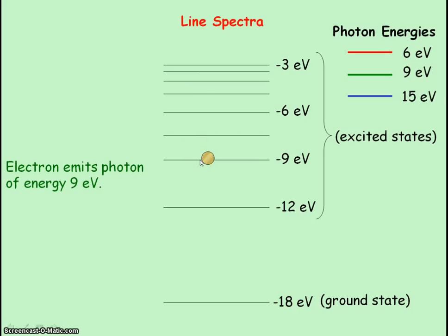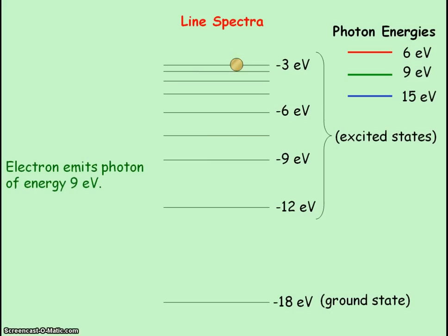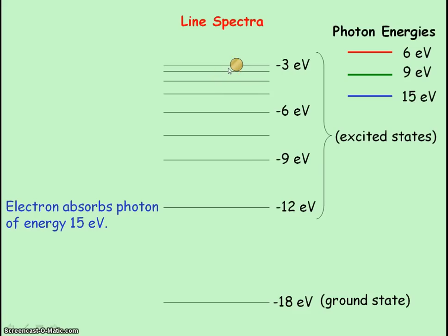The electron can then emit a photon of 9 eV when it returns to the ground state. If the electron absorbs a photon of 15 eV, it gains 15 eV of energy and moves to the minus 3 eV energy level. It can then return to the ground state by emitting a 9 eV photon, moving from minus 3 eV to minus 12 eV, then emitting a 6 eV photon moving from minus 12 eV to minus 18 eV. Alternatively, it could emit a single photon of 15 eV and go straight back to the ground state.